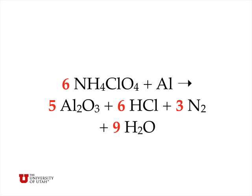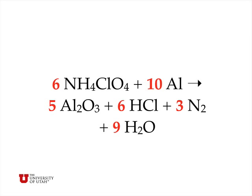And so now we have six ammonium perchlorates going to five aluminum oxides, six HCls, three nitrogens, and nine water molecules. The last step is to balance the aluminum. That's easy to do because on the product side we have ten aluminum atoms in the Al2O3. It only appears on one side, and so we can simply multiply the aluminum by a stoichiometric coefficient of ten in order to balance the equation.